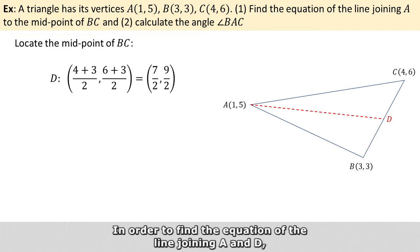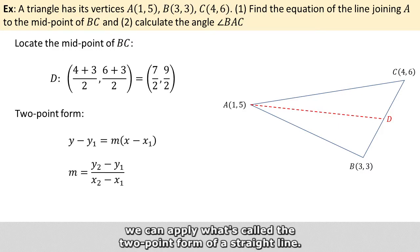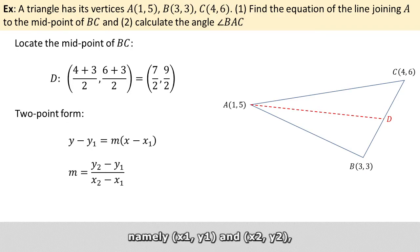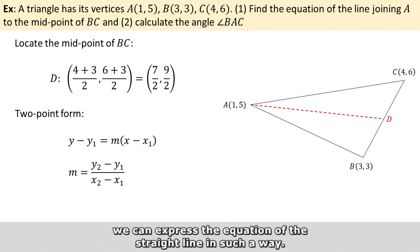In order to find the equation of the line joining A and D, we can apply what's called the two-point form of a straight line. Basically, we know two points on the straight line, namely x1, y1, and x2, y2. We can express the equation of the straight line in such a way.